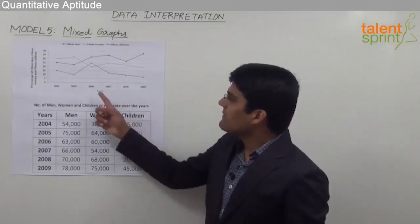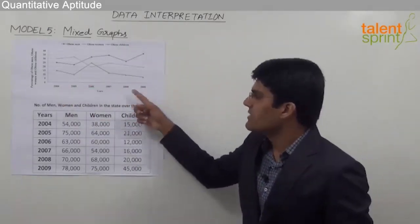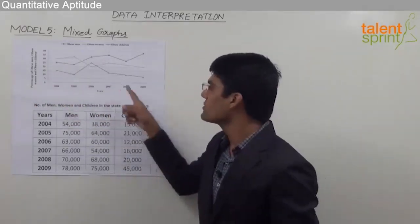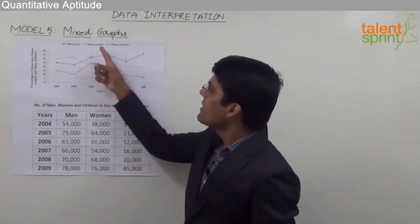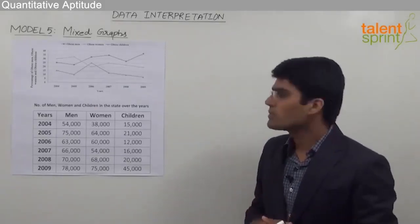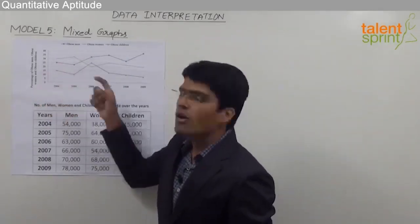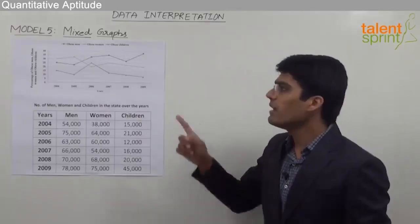As you can see, the line graph talks about obese men, obese women, and obese children from 2004 to 2009. The y-axis shows the percentage. Obese men are represented by the line with circles, obese women by the line with rhombuses, and obese children by the line with triangles. So in 2004, obese men were 25%, obese women were 30%, and obese children were 15%.